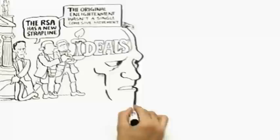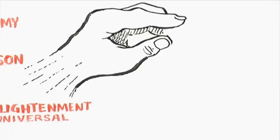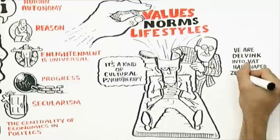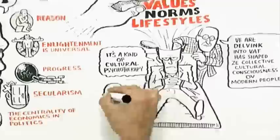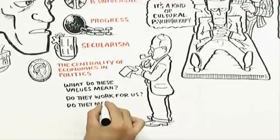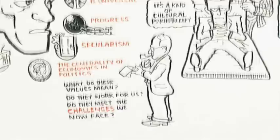So when we think about the core ideals of the enlightenment, it's not simply a kind of historical process. It's in a way, when we think about how those ideals have shaped modern values, norms, and lifestyles, it's a kind of process of cultural psychotherapy. We're delving into what has shaped the collective consciousness of modern people. And that enables us to explore critically whether those values and what they have come to mean to us still work for us, and whether they meet the challenges that we now face.